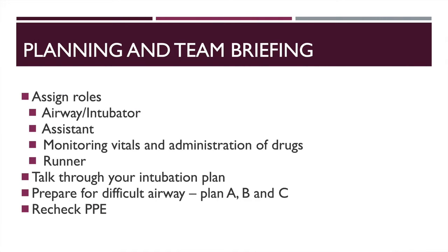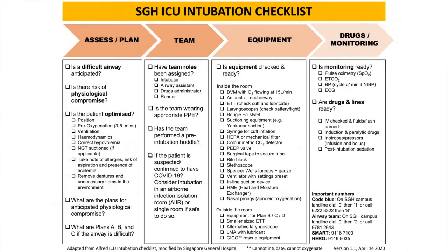Number four is planning and team briefing, and it's a very important part of the intubation preparation. Make sure you assign roles clearly to all team members so that everyone knows exactly what their responsibility is during the intubation process. Also talk through the intubation plan so that all team members are aware of what is plan A, B and C and what to do when a difficult airway is encountered. And of course, make sure that everyone dons appropriate PPE and take this opportunity to recheck each other's personal protective equipment. This image shows an intubation checklist which is extremely useful to go through a final time before going into the room to intubate the patient.